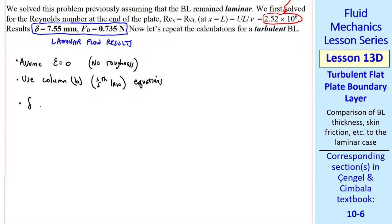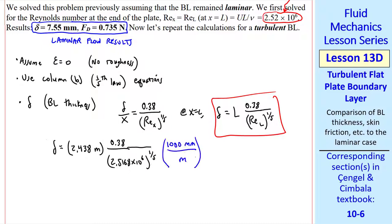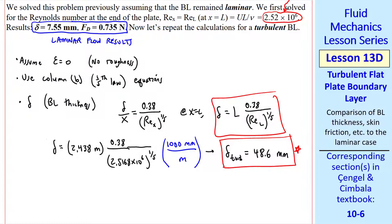First, we'll calculate delta, the boundary layer thickness. The one-fifth law empirical equation is repeated here. And at x equal L, delta equal L times 0.38 over REL to the one-fifth. I plug in L, Reynolds number, and a unity conversion factor. So, the turbulent boundary layer thickness is 48.6 millimeters. Compared to our laminar case, this is about 6.4 times larger.